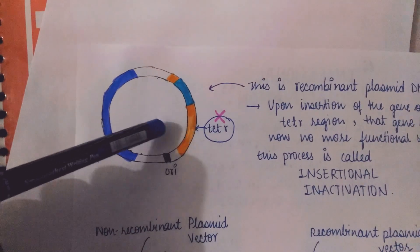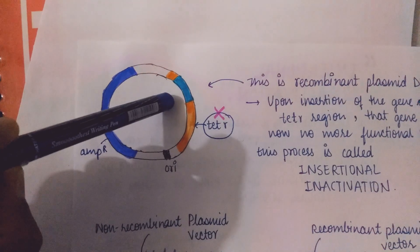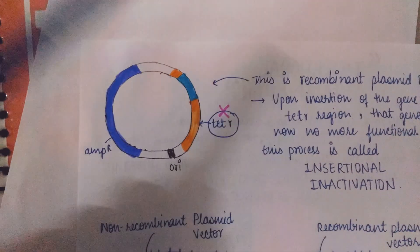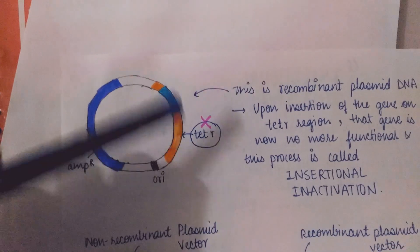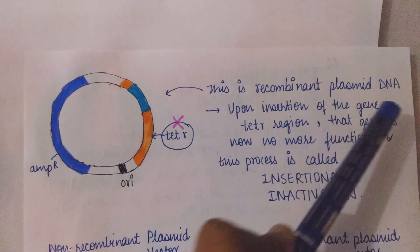So the gene of interest has incorporated in the plasmid vector. This is the gene of interest. Now this plasmid vector is known as recombinant plasmid DNA.